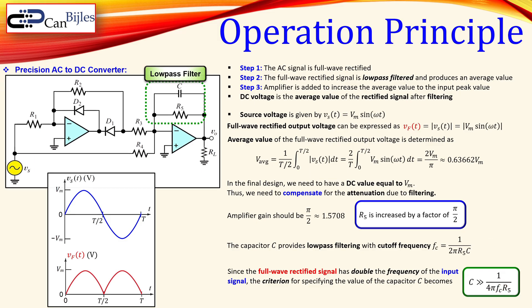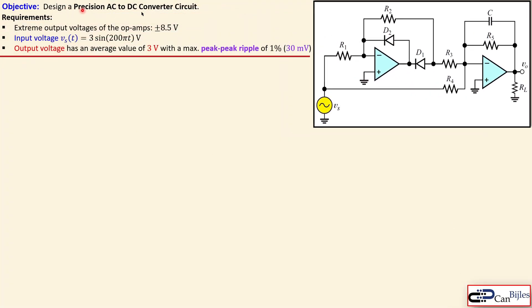Now for our design problem: we want to design a precision AC to DC converter circuit. The op-amp output voltage limits are ±8.5 V. The input voltage is 3 sin(200πt) volts, so frequency is 100 Hz and amplitude is 3 V. The output voltage will have an average DC value of 3 V.